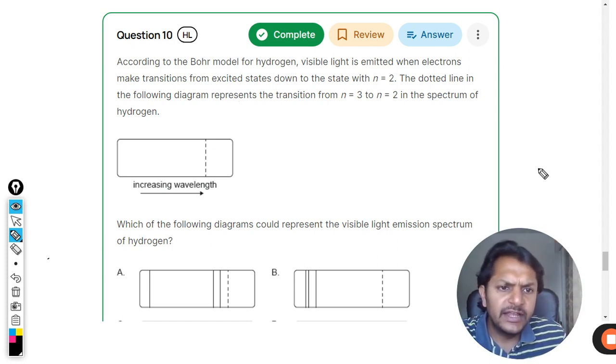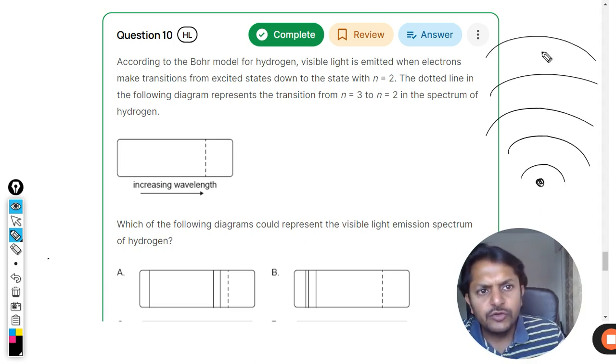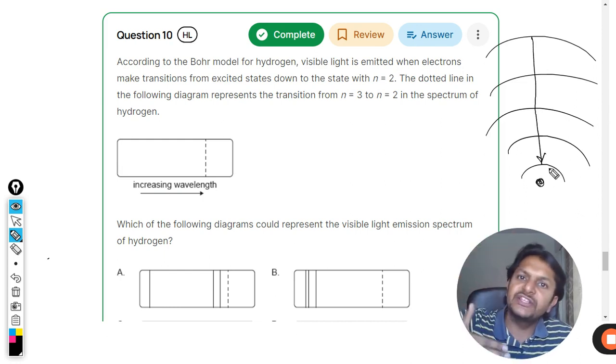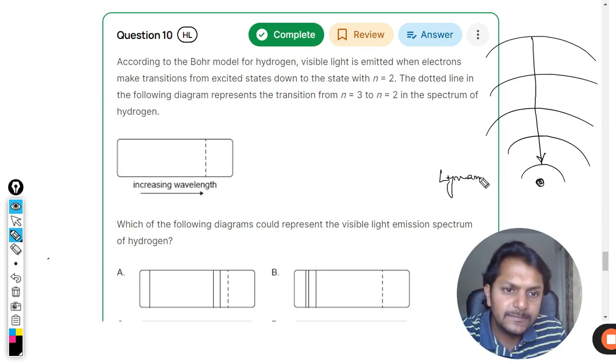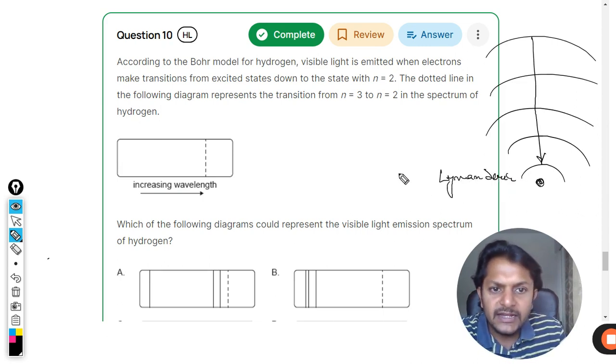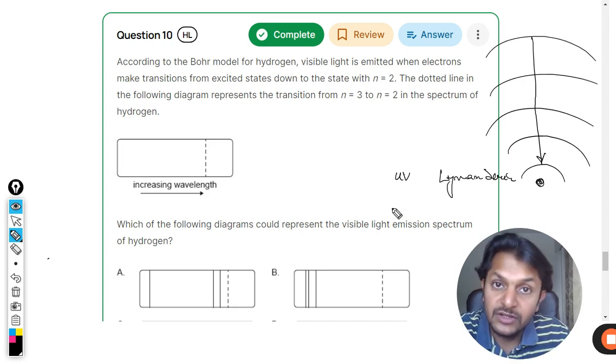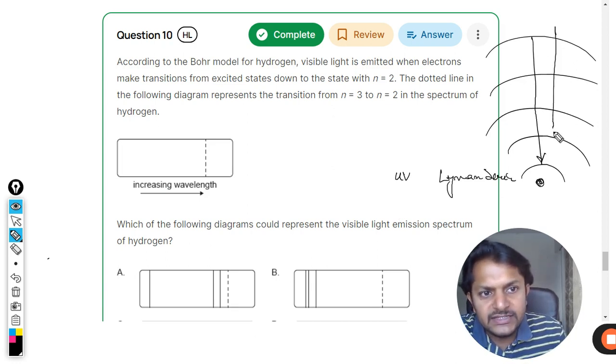Absolutely correct. This is the nucleus: n equals one, two, three, four, five. When any electron jumps from the upper shells to shell one, we call it the Lyman series and it produces UV radiation. When an electron jumps to shell number two, the energy produced is known as the Balmer series.